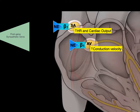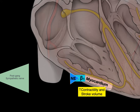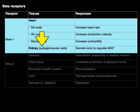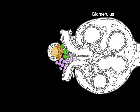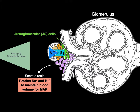Stimulating the SA and AV nodes increases heart rate, cardiac output, and conduction velocity. There are also beta-1 adrenergic receptors on the heart muscle, the myocardium — stimulating those beta receptors increases contractility, which increases stroke volume. Now, the JG cells in the kidney secrete renin and have a beta-1 adrenergic receptor. Here is the glomerulus with juxtaglomerular cells in green. When sympathetics release norepinephrine stimulating the JG cells, they secrete renin, which retains sodium and water in the distal convoluted tubule and collecting ducts to maintain blood volume for mean arterial pressure.